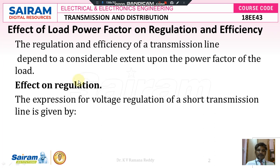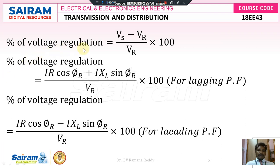Effect on regulation: The expression for voltage regulation for a short transmission line is given by percentage voltage regulation equal to sending end voltage minus receiving end voltage divided by receiving end voltage, into 100. This is the general formula used to find voltage regulation for any load. The expanded formula is: percentage voltage regulation equals Ir·cosφr plus I·xl·sinφr, divided by Vr, into 100.